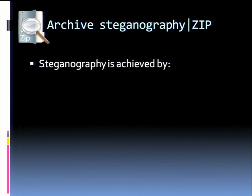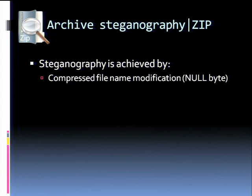We're going to go over this technology in the zip file format only. It's achieved by modifying the name of the compressed file inside headers — basically, just by inserting a new character in front of the first letter of the compressed file, you are able to hide files. But that only works for WinRAR, and other processors will show an empty file slot.